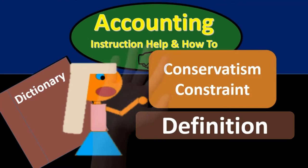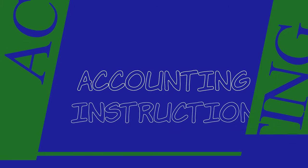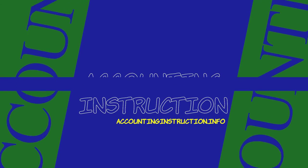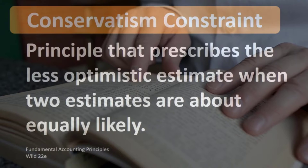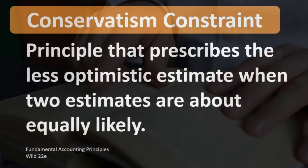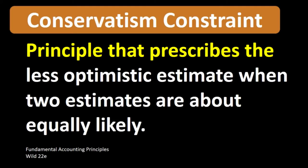Hello, in this lecture we're going to define the conservatism constraint. According to Fundamental Accounting Principles, Wild 22nd edition, the definition of conservatism constraint is a principle that prescribes the less optimistic estimate when two estimates are about equally likely.